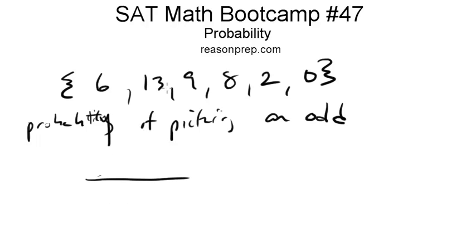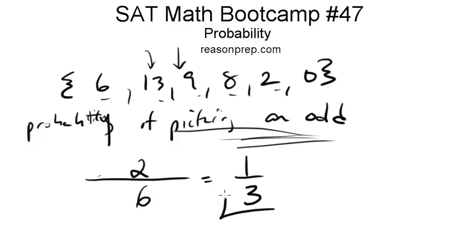For this we have to make a fraction. On the bottom we put the total number of possible outcomes, so here we've got 1, 2, 3, 4, 5, 6 numbers to pick from. And on the top we put the number of outcomes that satisfy our question, so the number of odds in this case. So we have 1 odd, 2 odd, and that's it. So we put that 2 on top, 2 out of 6, or 1 out of 3 would be our probability.